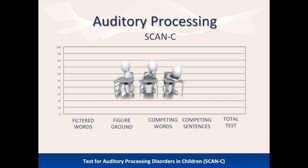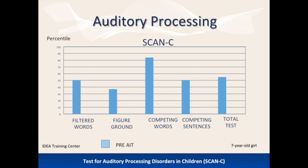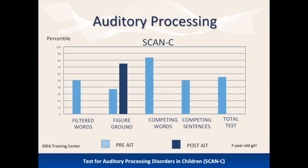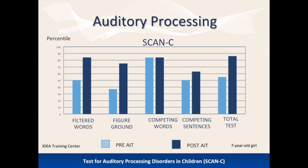The Test for Auditory Processing Disorders in Children (SCAN-C) is similar to the test for adults but is designed for use with children. Auditory processing difficulties are evaluated with four different tasks on this test. The SCAN-C was given to a 7-year-old girl who had difficulty filtering background noise and had difficulty attending to the teacher in class. Her data indicates a significant improvement in filtering background noise six months after AIT. Scores that were average also improved to above-average ranges, and her classroom performance improved significantly.